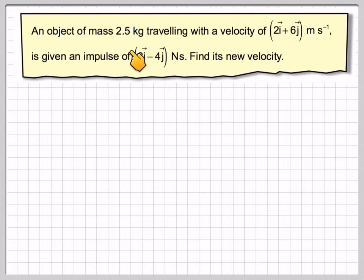An object of mass 2.5 kilograms is travelling with a velocity of 2i plus 6j meters per second. If it is given an impulse of 3i minus 4j newton seconds, find its new velocity.